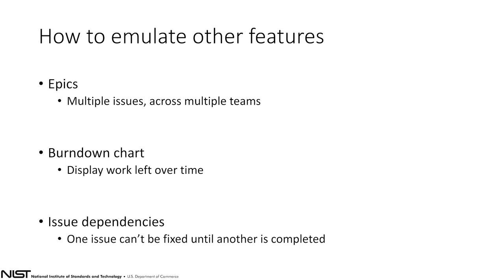Epics are when you have multiple issues, often across multiple teams, and you'd like to collect them into a larger project that you're working on. Burndown charts are when you have a list of issues like that milestone I showed you, and you'd like to see a chart of how they're getting completed and whether, if you set a deadline date, you're on track. Issue dependencies are when I have one issue that can't really be worked on until another issue gets completed. So what I'm going to show you is the secret code to how you can do some of these with GitLab Core right now.